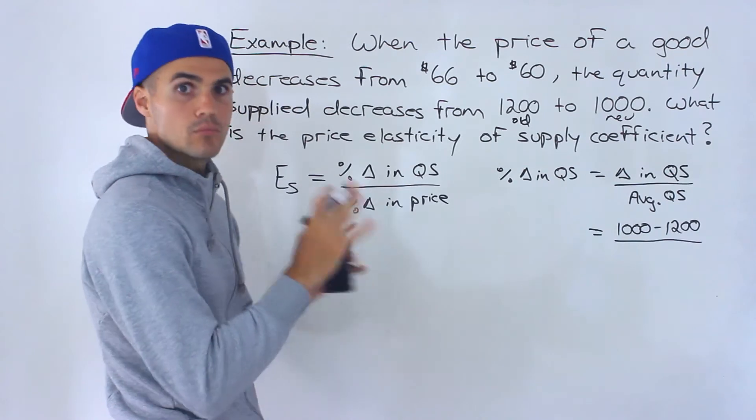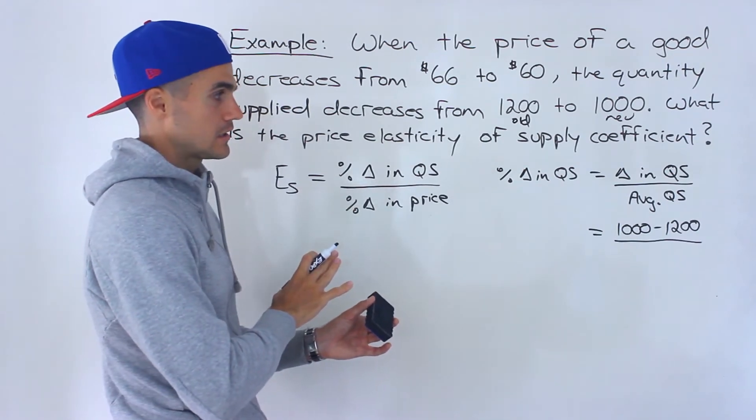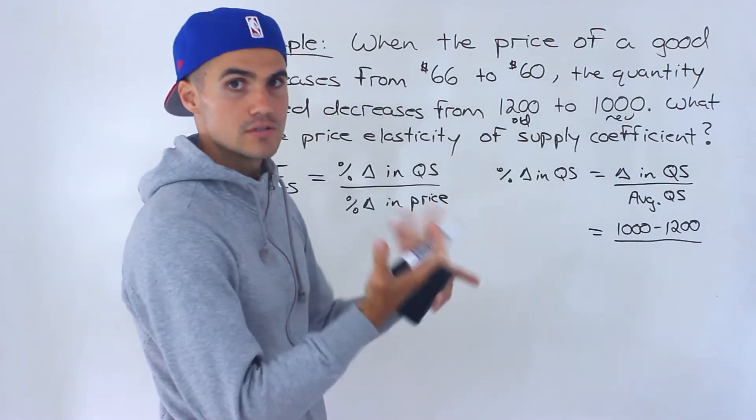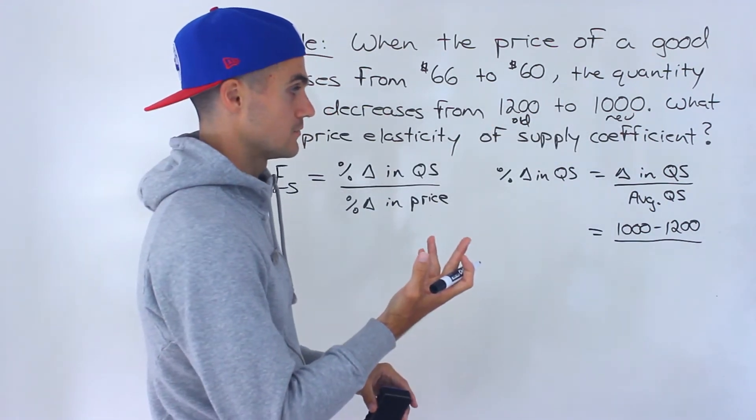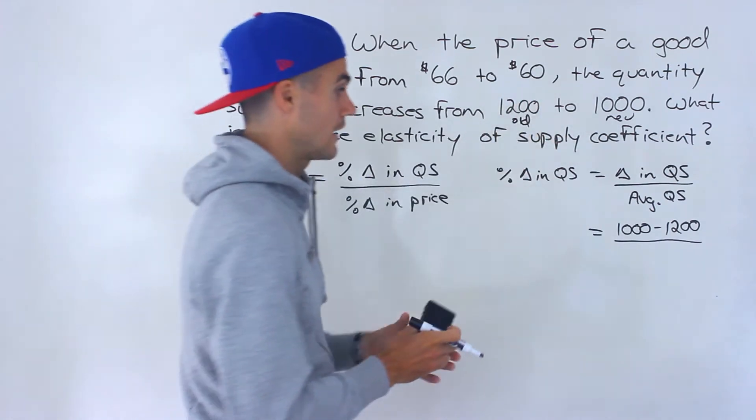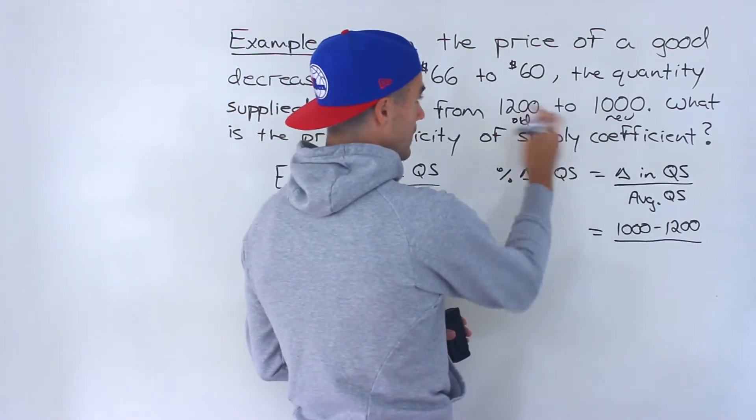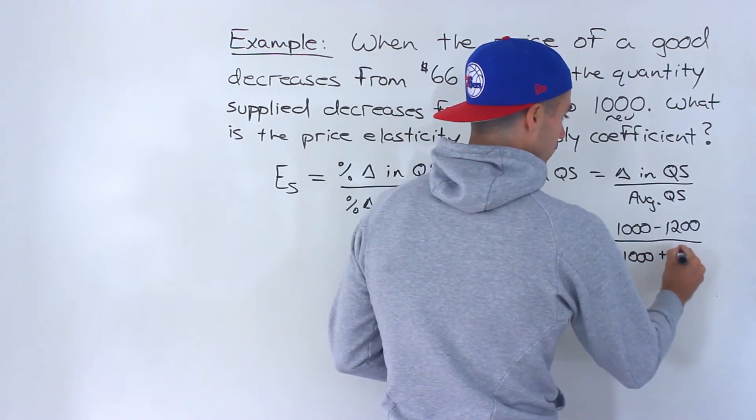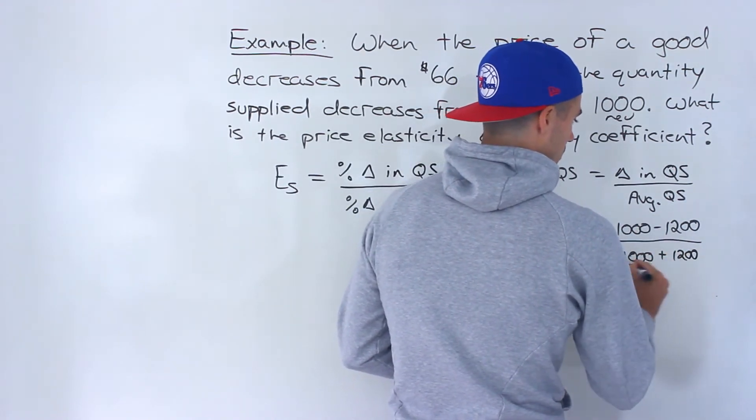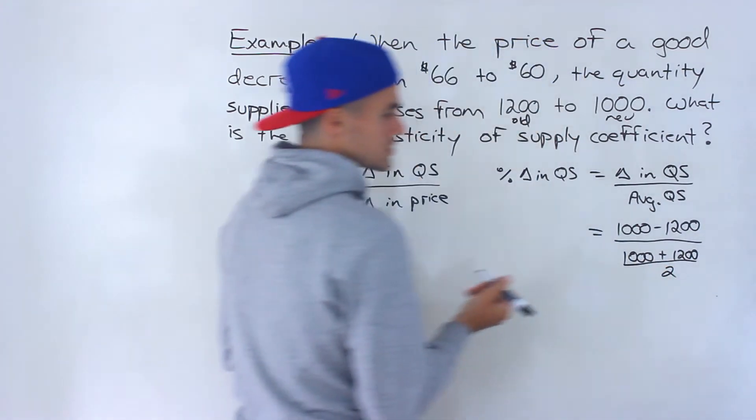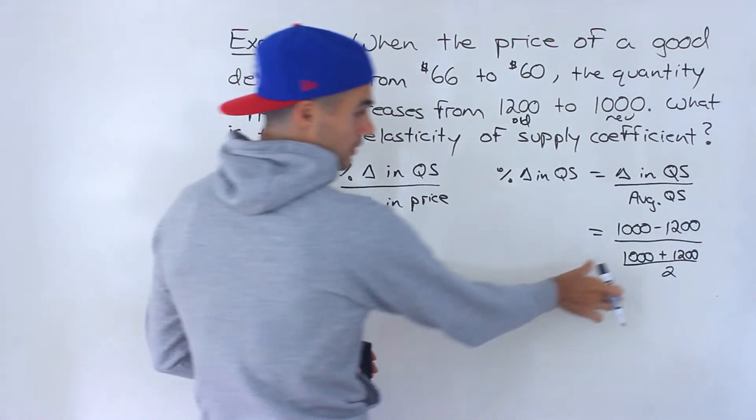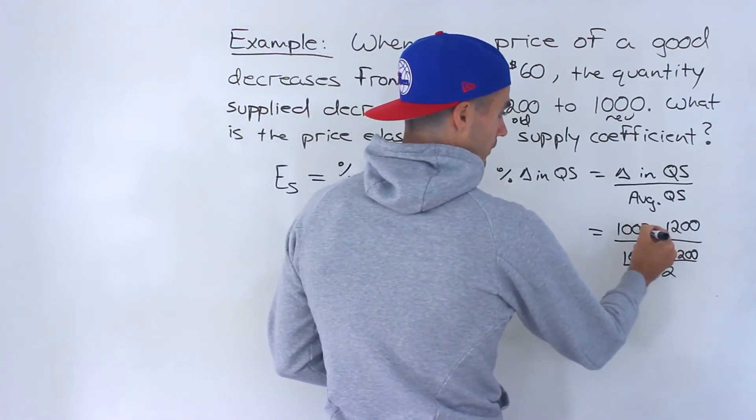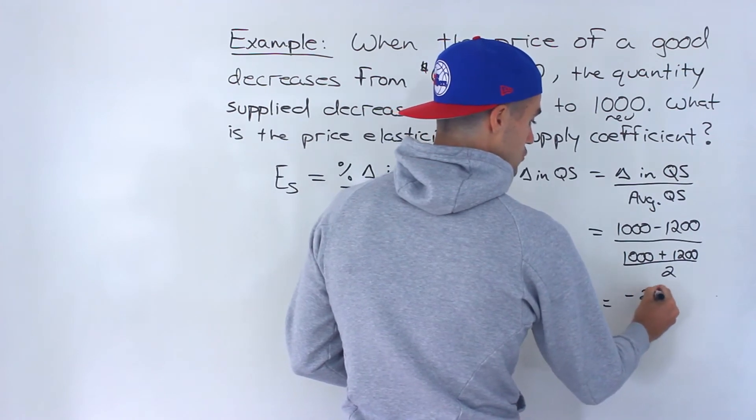Well, exact same as when we're dealing with the elasticity of demand. You basically add these two, divide them by two. You're trying to get the average between those two values. So it doesn't matter whether you put the 1000 or 1200 first. I'll put the 1000 just to keep it in line with the numerator. But whichever one you put first, you're going to get that same value here in the denominator. So this is going to end up being 1000 minus 1200 is negative 200.